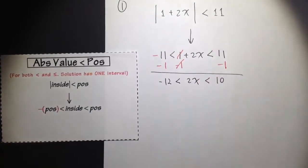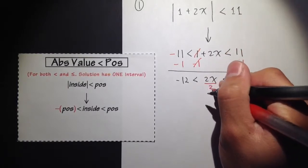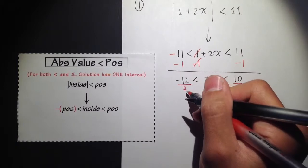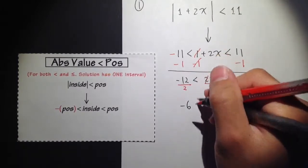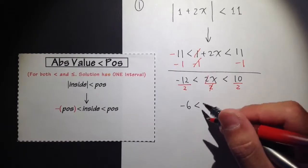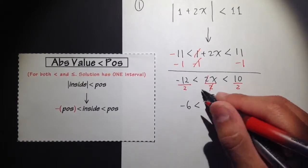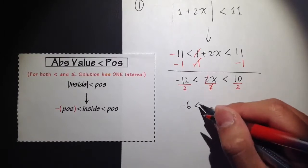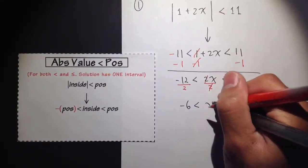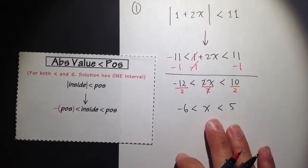We are almost there because we have 2x in the middle instead of just x. Since it is 2 times x, I can divide all three sides by 2 to cancel the 2s. Negative 12 divided by 2 gives negative 6. Maintain the inequality sign — it does not change because we divided by a positive number. We only change the inequality sign if we divide by a negative number, but I will show that in the next example. In the middle we just have x, and 10 divided by 2 is 5. So we have isolated x and solved it.